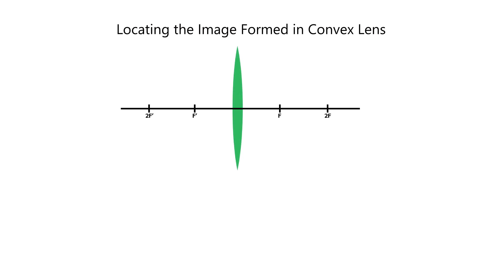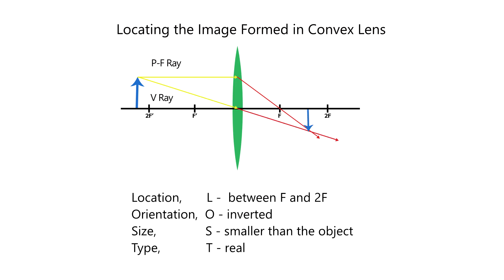The same as with the mirror ray diagram, you can choose two of these three principal rays for convex or concave lens. Let's start! We place the object beyond 2F prime of the lens and use PF ray and V ray. The image is located between F and 2F, inverted, smaller than the object, and real.